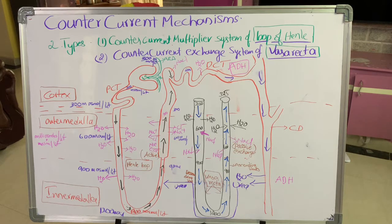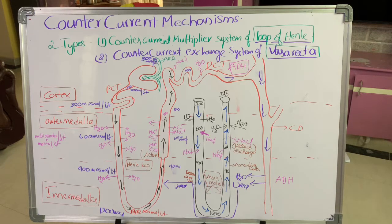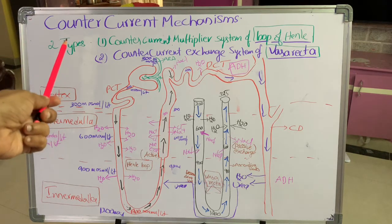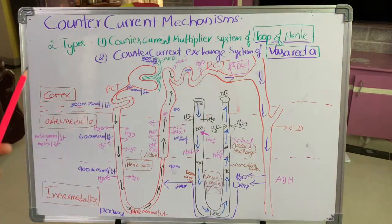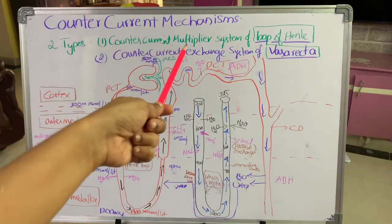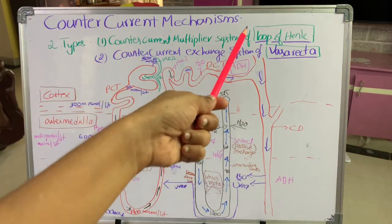These mechanisms are useful for the formation of hyperosmolarity in the interstitial fluid of the medulla, so that the excreted urine will be hypertonic to the blood plasma. There are two types of counter current mechanisms: the first is the counter current multiplier system of loop of Henle, and the second is the counter current exchange system of vasorecta.